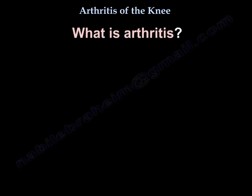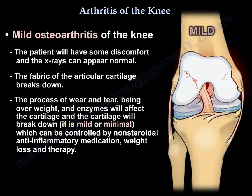So, what is arthritis? Arthritis can be mild. The patient will have some discomfort. The x-rays can appear normal. The fabric of the articular cartilage breaks down. The process of wear and tear, overweight, and enzymes will affect the cartilage, and the cartilage will break down. But it is mild or minimal, so you can control that with non-steroidal anti-inflammatory medication, weight loss, and therapy.